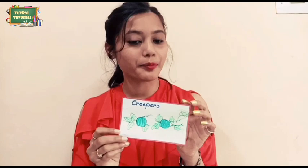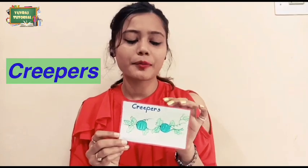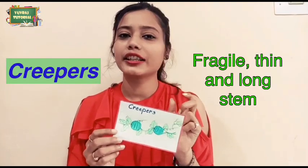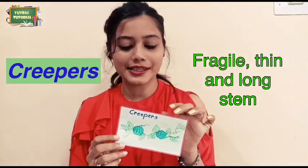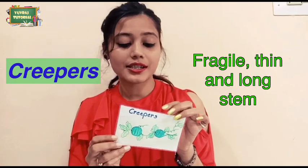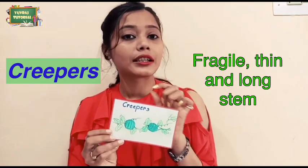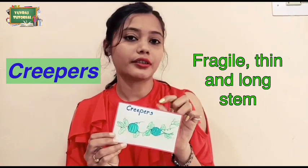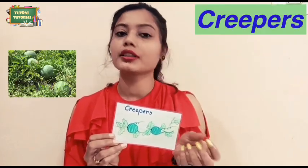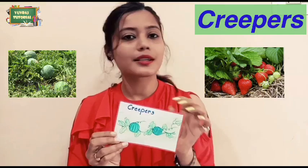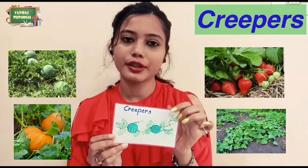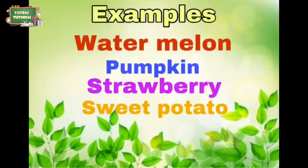The next type is Creepers. Creepers have very fragile, thin and long stems. As the name suggests, creepers creep on the ground. Watermelon, strawberries, and pumpkins are some examples of creepers.